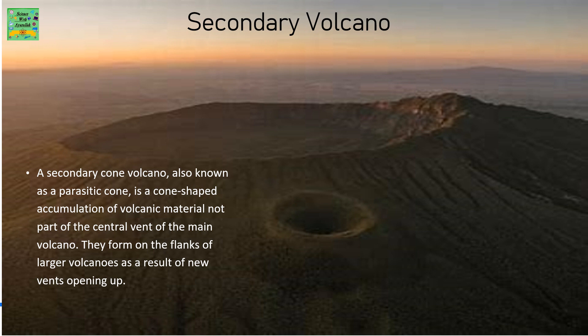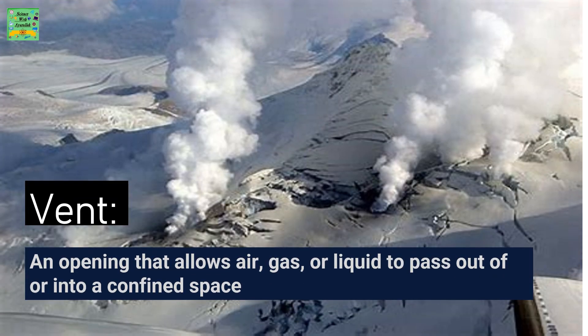Secondary volcano: a secondary cone volcano, also known as a parasitic cone, is a cone-shaped accumulation of volcanic material not part of the central vent of the main volcano. They form on the flanks of larger volcanoes as a result of new vents opening up. Vent: an opening that allows air, gas or liquid to pass out of or into a confined space.